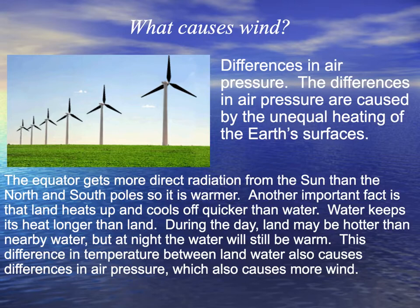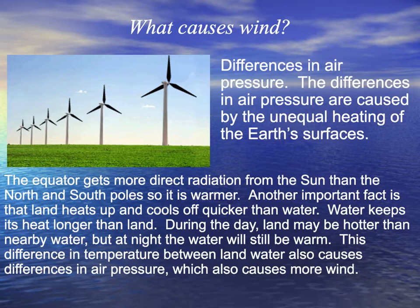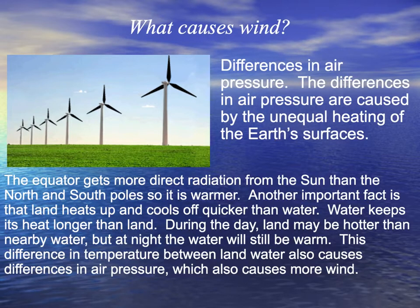What causes wind? Differences in air pressure. The differences in air pressure are caused by the unequal heating of the Earth's surfaces. The equator gets more direct radiation from the sun than the north and south poles, so it's warmer. Another important fact is that land heats up and cools off quicker than water — water keeps heat longer than land. During the day, land may be hotter than nearby water, but at night that water will still be warm. This difference in temperature between land and water also causes differences in air pressure, which causes more wind.